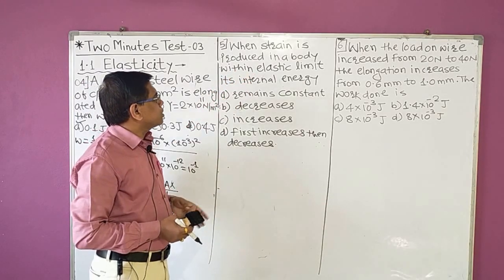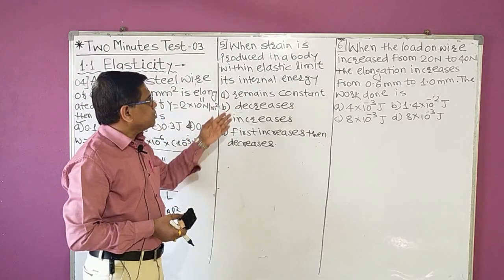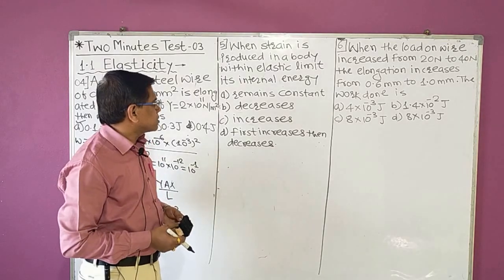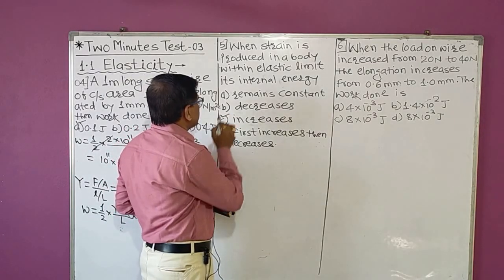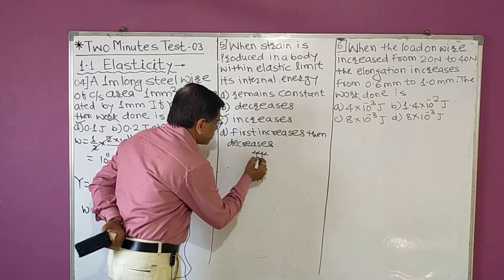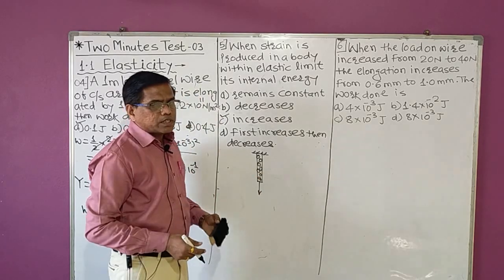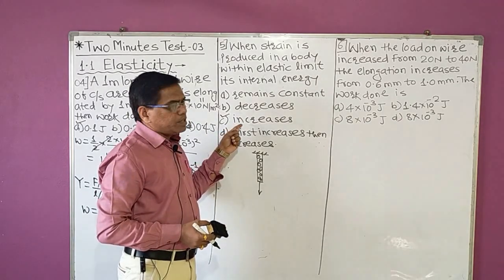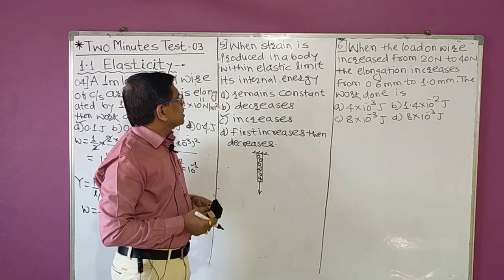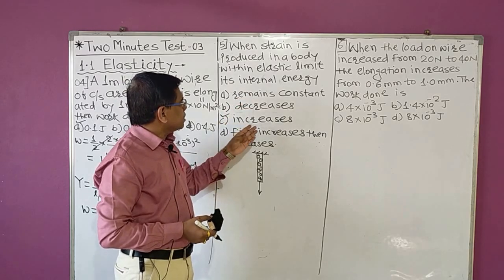MCQ 5: When strain is produced in a body within the elastic limit, its internal energy — remains constant, decreases, increases, or first increases then decreases? The answer is that internal energy increases. When a load is applied to an elastic material, molecules are stretched apart, increasing intermolecular forces, which in turn increases the strain energy of the body. So internal energy increases.